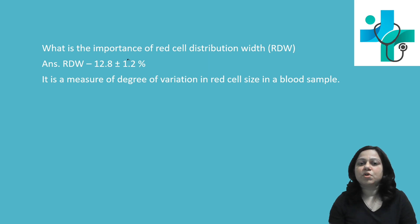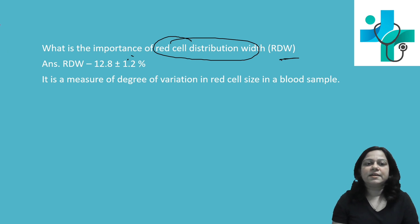What is the importance of red cell distribution width? Red cell distribution width normal is 12.8 plus or minus 1.2 percent.